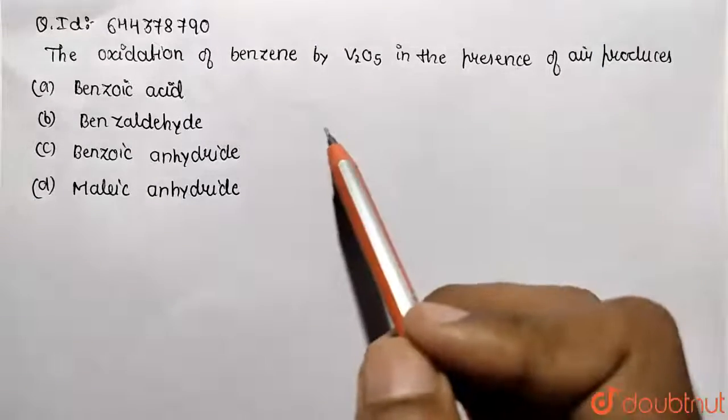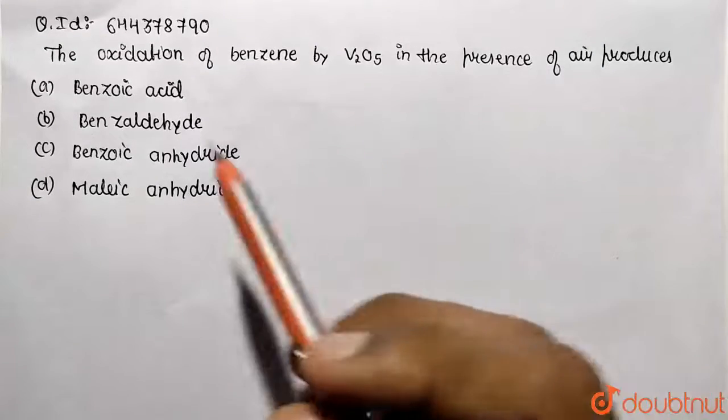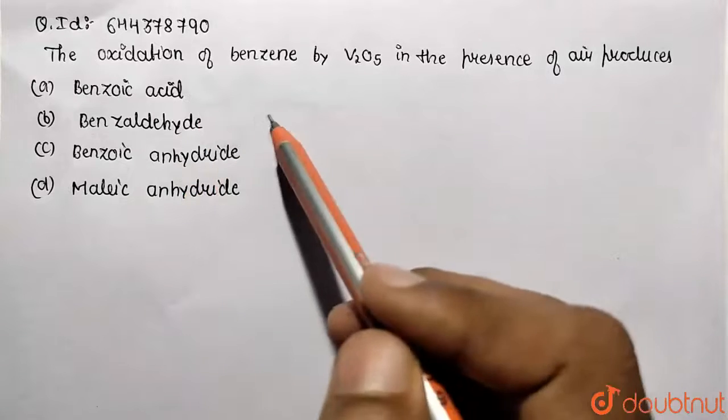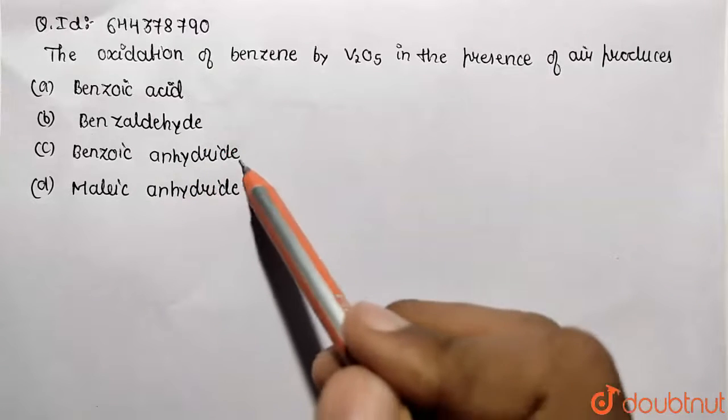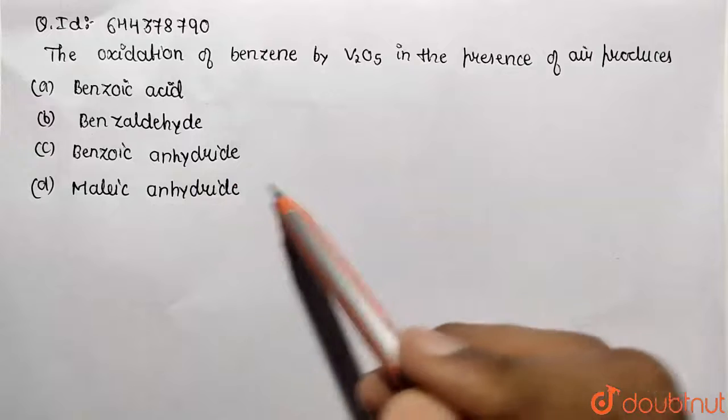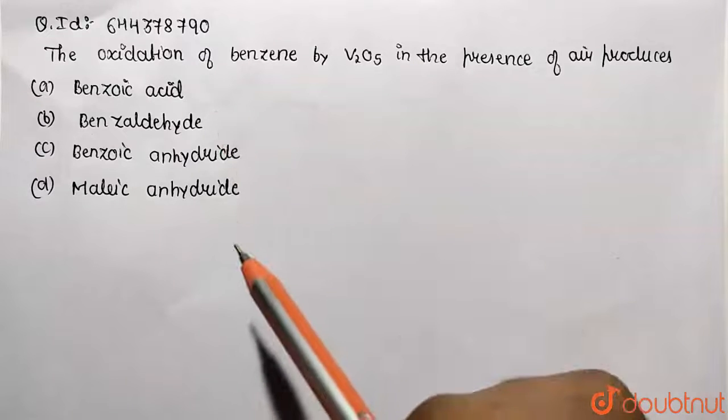So basically, what is going to be the product that we need to identify? Whether it will be benzoic acid, or benzaldehyde, or benzoic anhydride, or maleic anhydride. We need to identify from the following four options.